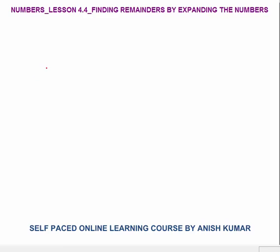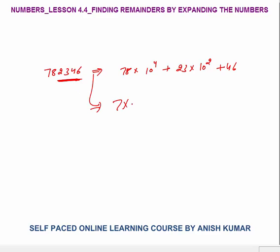Let's discuss first how we can expand numbers. For example, 782346 — how can we expand this number? We can write it as 78 × 10^4 + 23 × 10^2 + 46, because there are two digits behind 23. Or you can break it further: 7 × 10^5 + 8 × 10^4 + 2 × 10^3 + 34 × 10^1 + 6. The basic concept is: how many digits appear after the digit you are considering — that will be the power of 10.